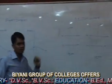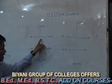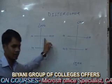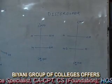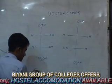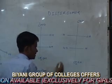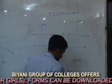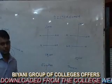Diastereomers have at least two chiral centers: one has the same configuration and another has a different configuration. Diastereomers are basically of two types: if the same groups are on the same side, that is called erythro, and if the same groups are on different sides, that is called threo. This representation is called the Fischer projection.